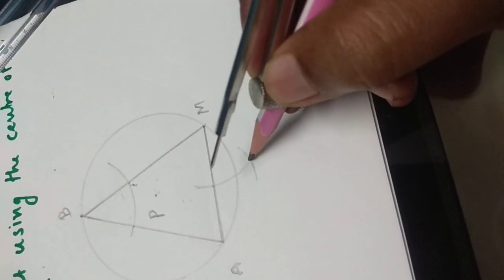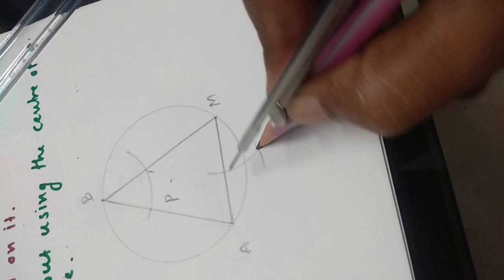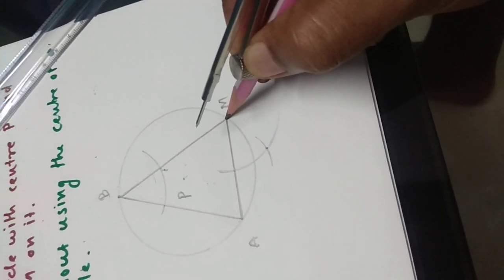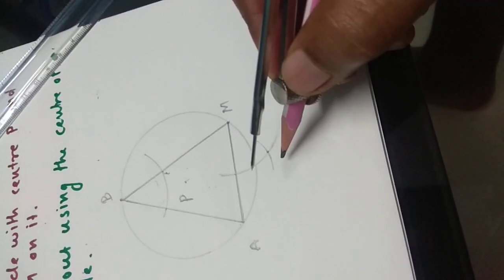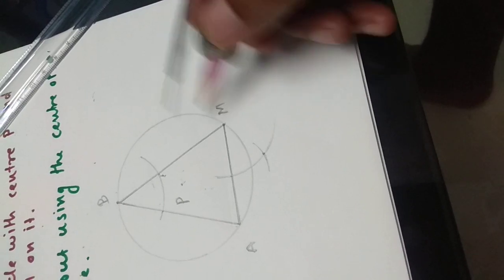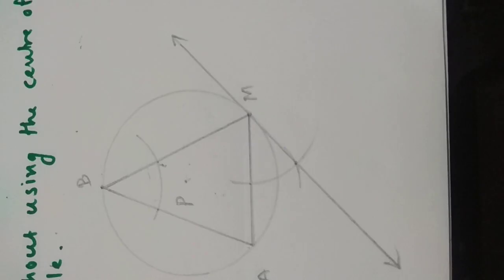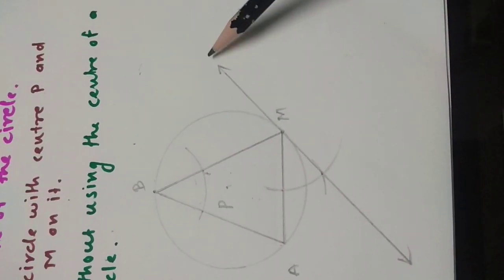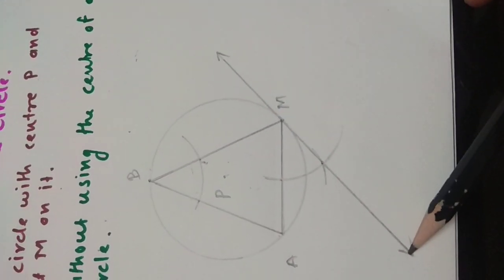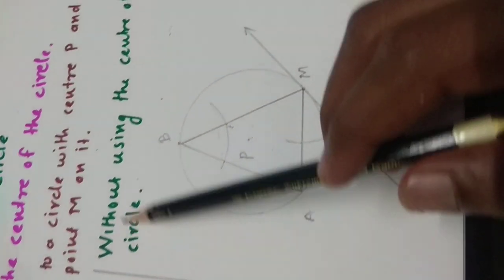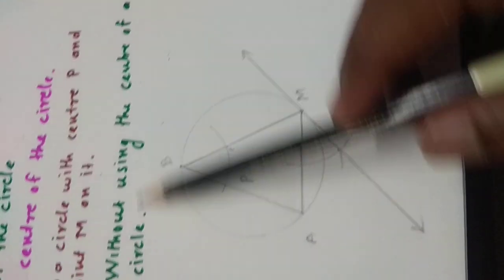Now, this intersecting point and point M, join these two points. This is our tangent without using center of a circle.